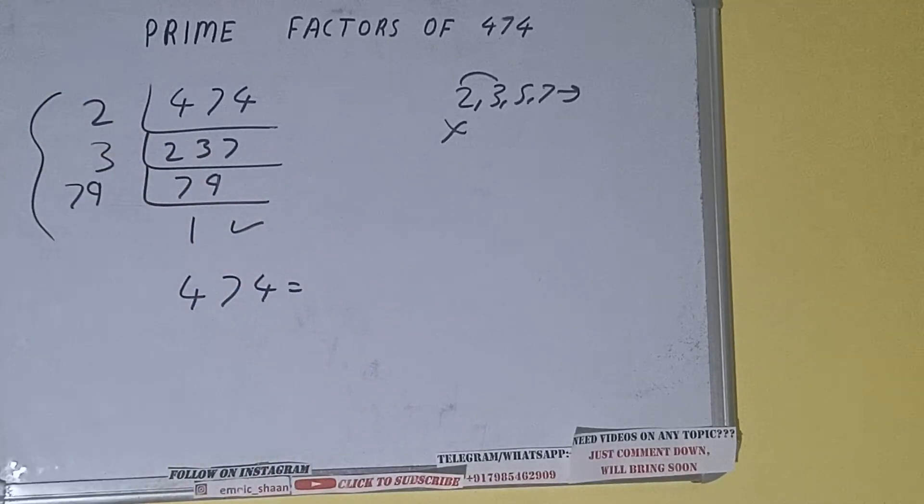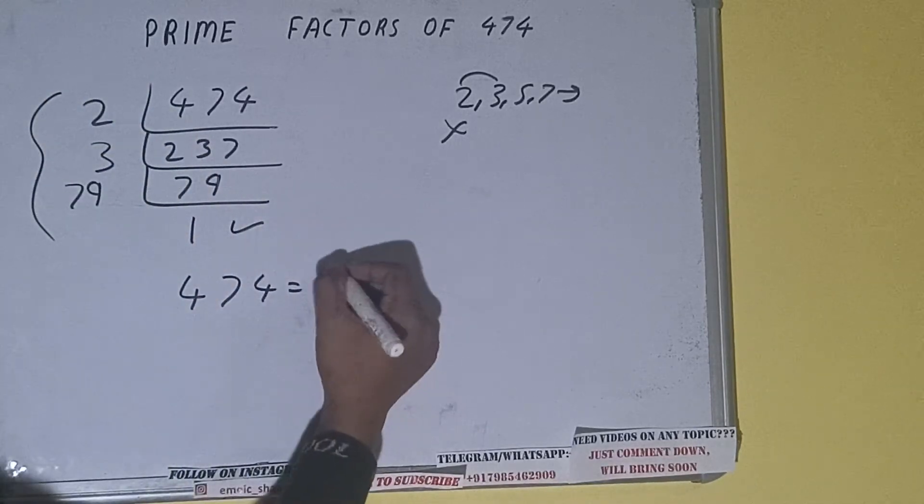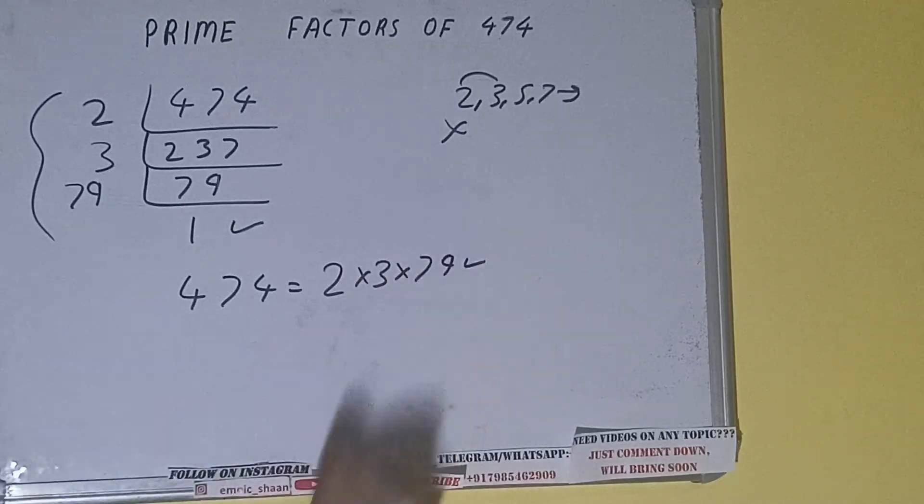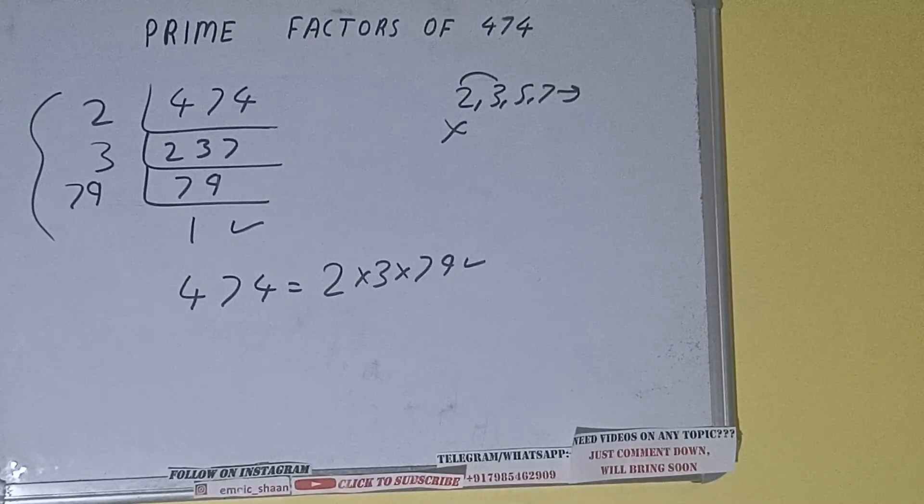That is, prime factors of 474 is equal to whatever we have on the left hand side: 2 times 3 times 79. That will be the answer.